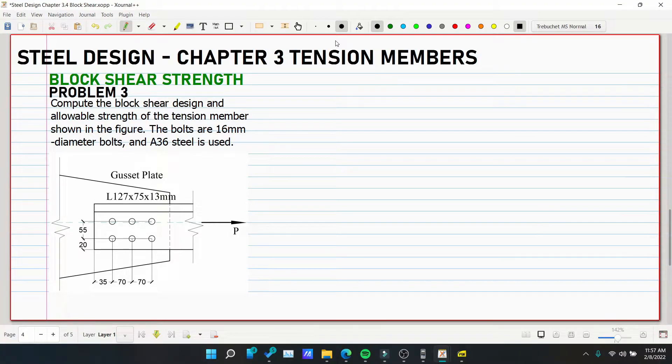Okay, so this is our problem number 3 for the block shear strength. Compute the block shear design and allowable strength of the tension member shown in the figure. The bolts are 16mm diameter bolts and A36 steel is used.